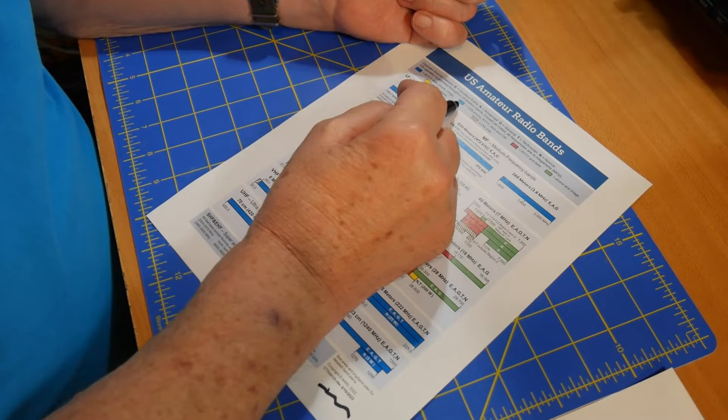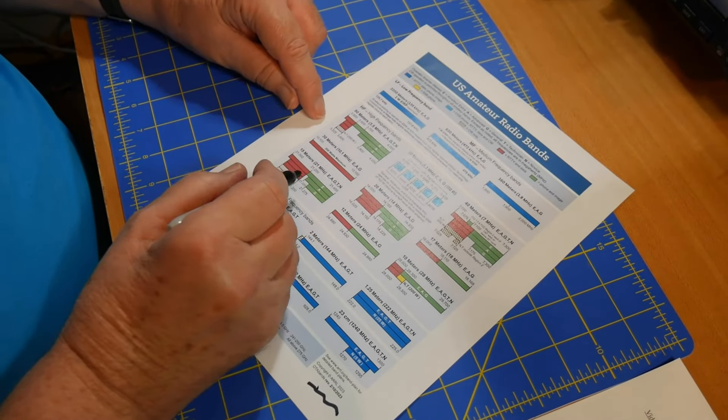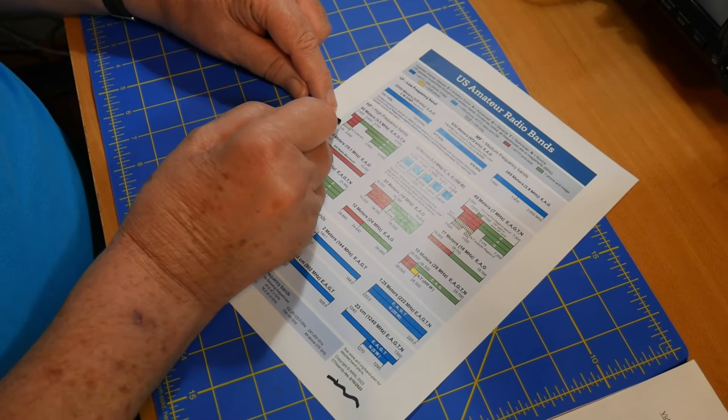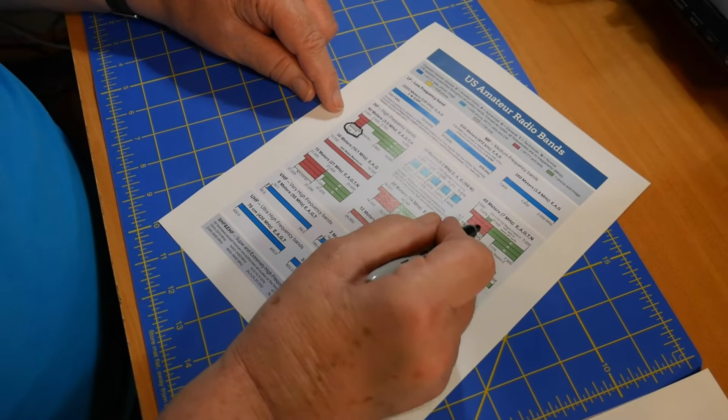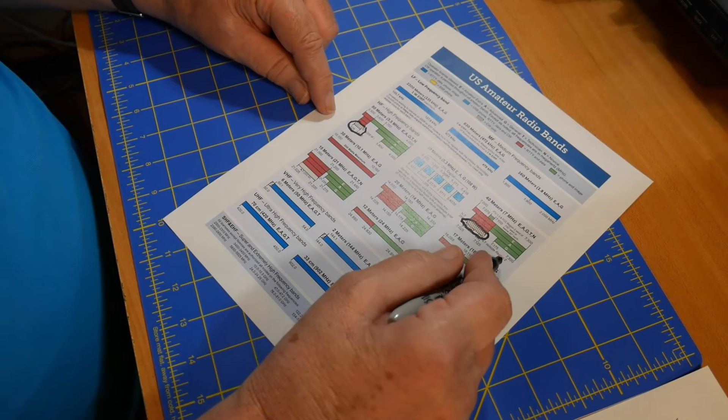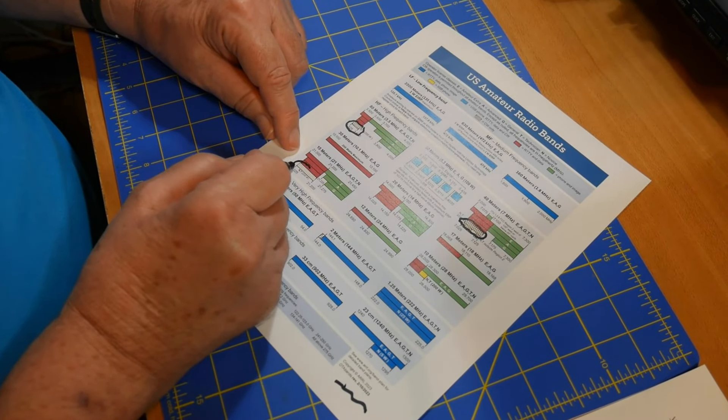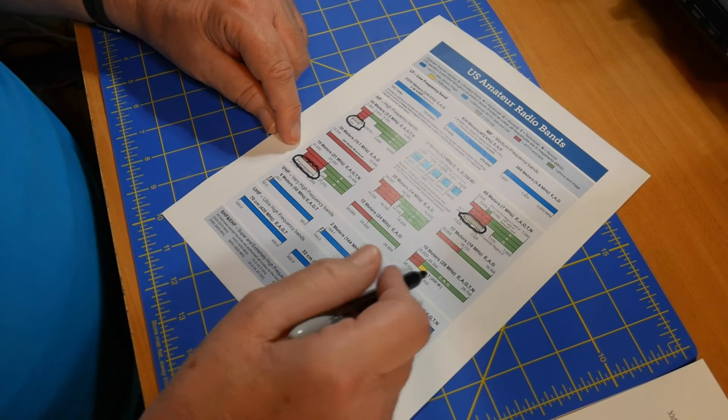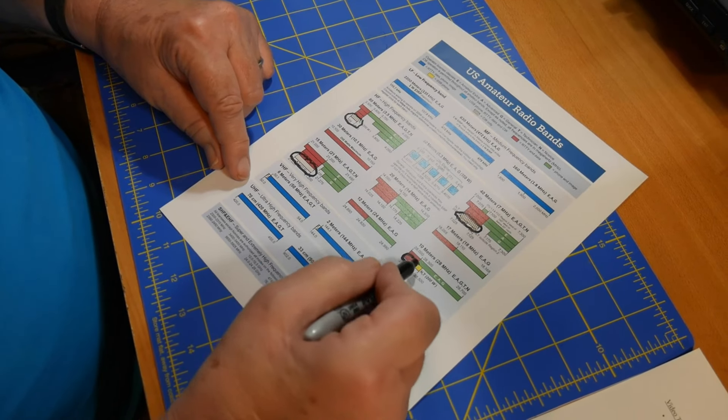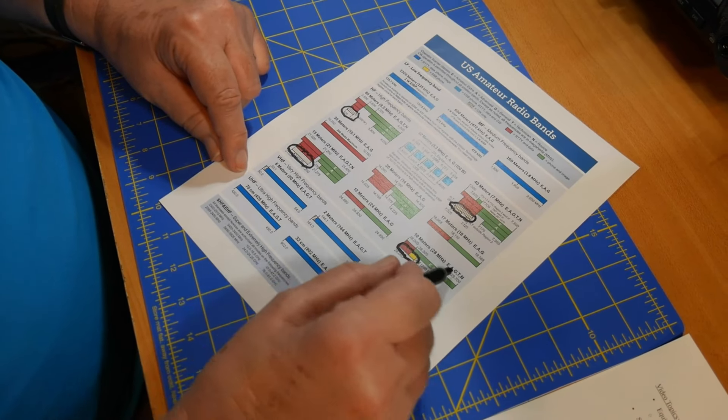This shows the different types of privileges that are available, and the first one we're going to start with is CW only. A lot of technicians don't know that they can operate in Morse code. That's this part right here on 80 meters, on 40 meters. That's the whole thing right here, unless you're outside region two. Region two is the Americas. And then the next one is up on 15 meters right here. You're limited to 200 watts. And then on 10 meters, you have all CW and data privileges here, plus some single sideband voice up here.